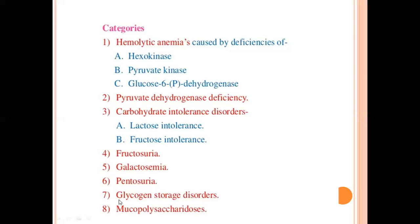In number 7, Glycogen Storage Disorders — this is a very vast topic and we will discuss it in detail separately. Number 8 is Mucopolysaccharides — the body is not able to break down mucopolysaccharides, and therefore their accumulation leads to various disease conditions.